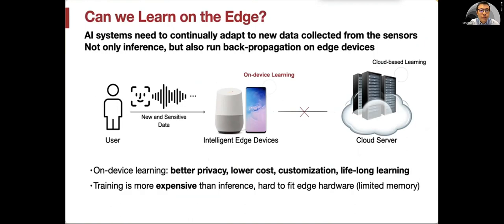Can we learn on the edge? AI systems need to continuously adapt to new data collected from sensors. We have to run not only inference but also back propagation locally on these edge devices. On-device learning has several advantages: better privacy where you don't have to transmit data to the cloud, lower cost, enables customization where every user can customize to their voice and habits, and enables lifelong learning to learn new concepts. However, training is much more expensive than inference. It is difficult to fit those edge devices with a limited amount of memory.